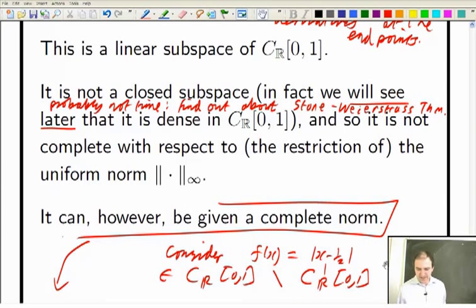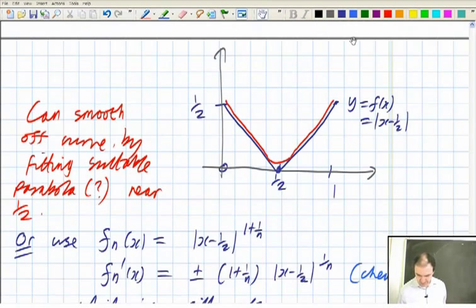Right. So we looked then at some functions that were continuous but not differentiable, and a sequence of functions in here, in this once continuously differentiable space, which converged uniformly to something that wasn't differentiable anymore, which we did in a couple of different ways.